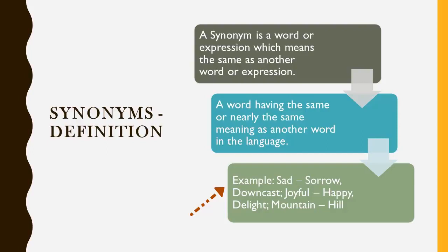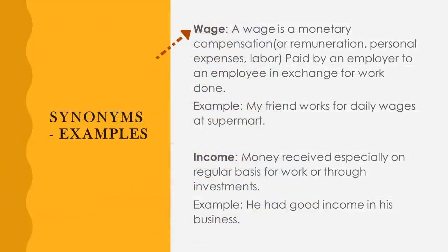For example, 'sad' and 'sorrow' have the same meaning. These words give the same meaning but their contextual usage is different. 'Downcast' is also almost equal to 'sad'. Another example: 'joyful', 'happy', 'joy', and 'delight' all give similar meaning. 'Mountain' and 'hill' both convey the same meaning. Let's go through more examples to get clarity.